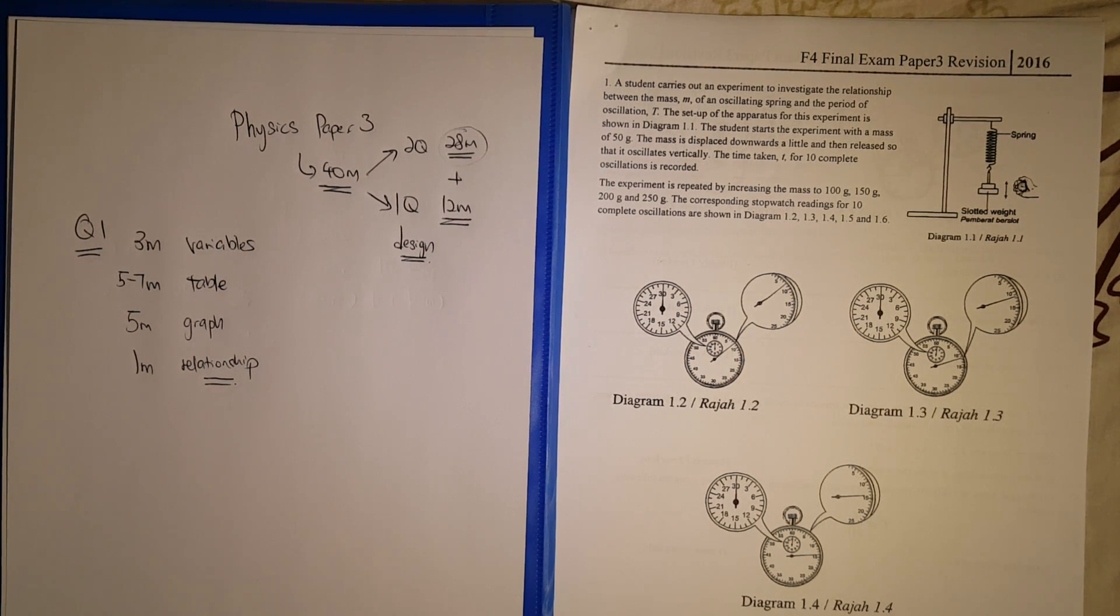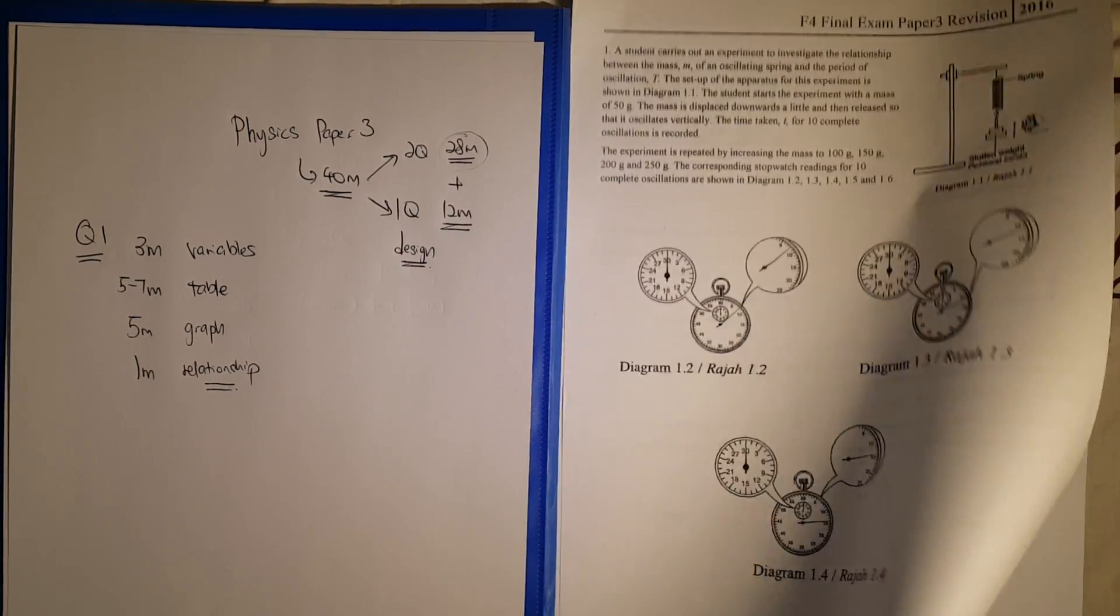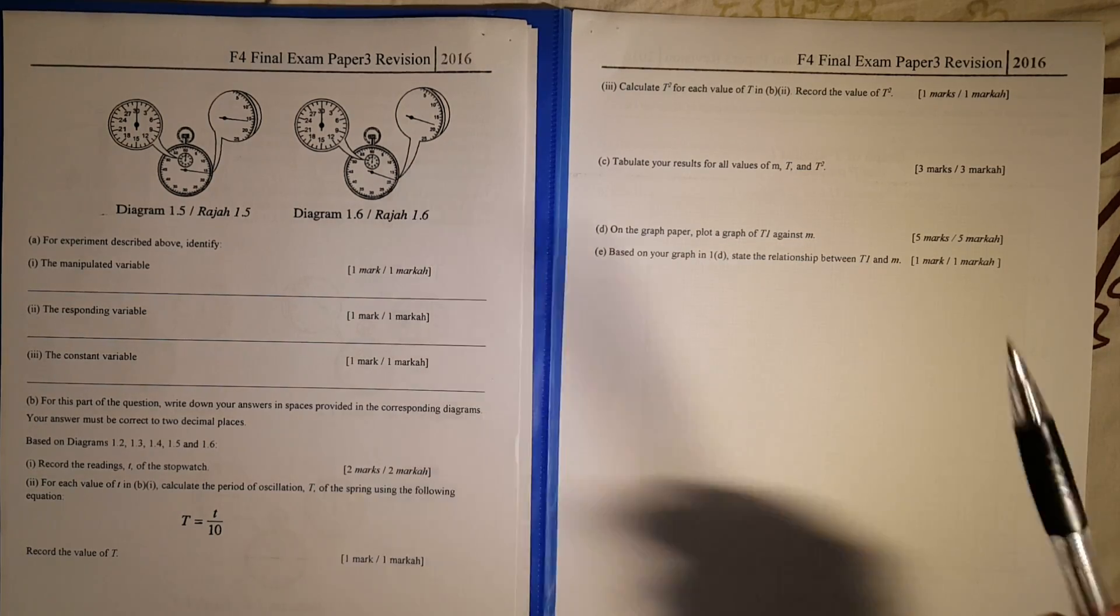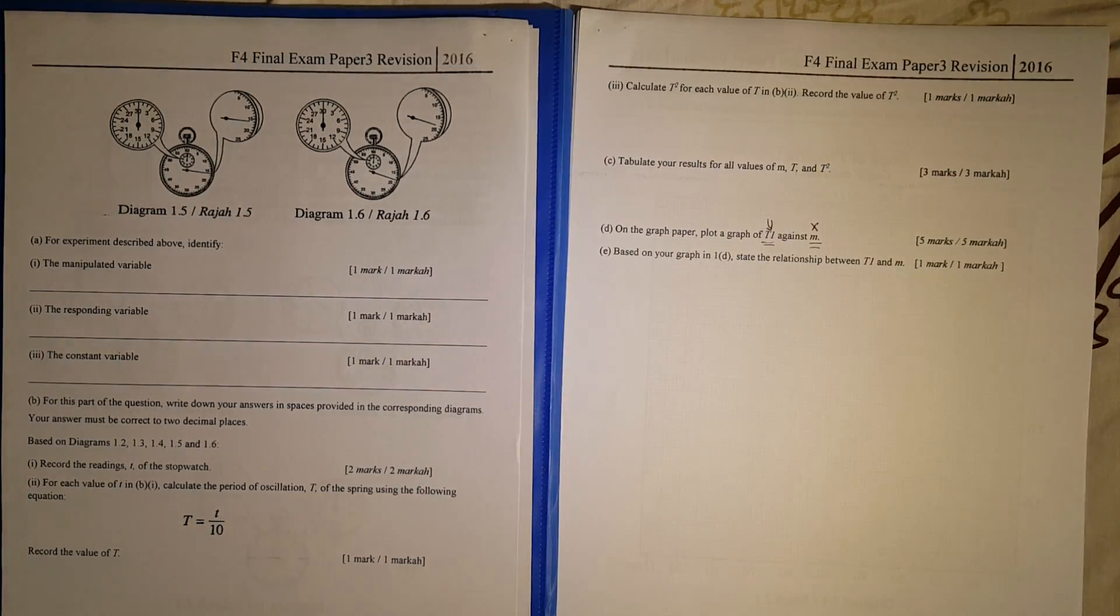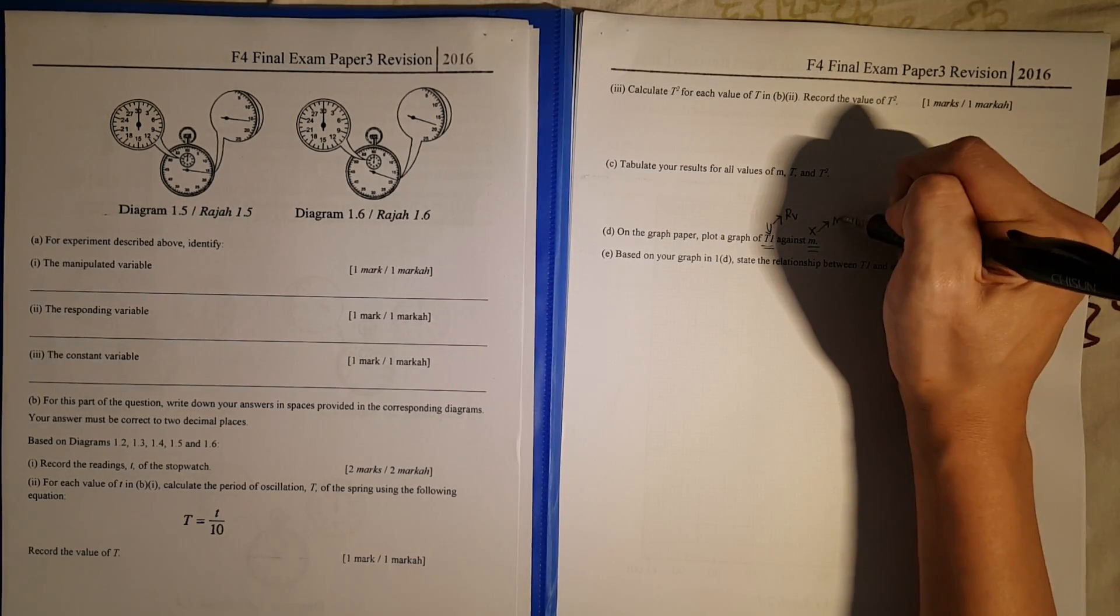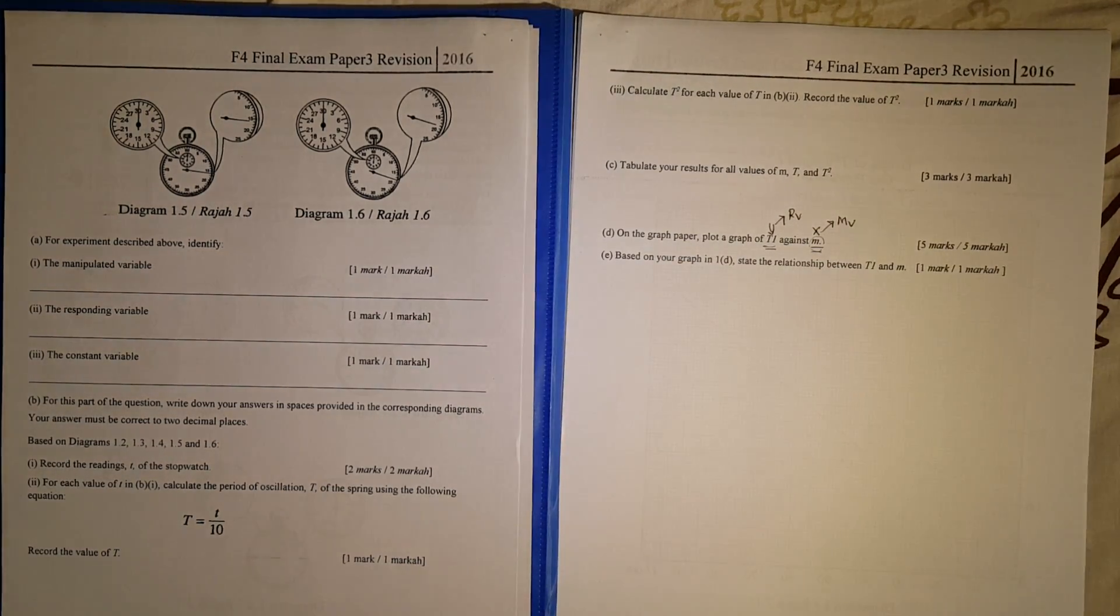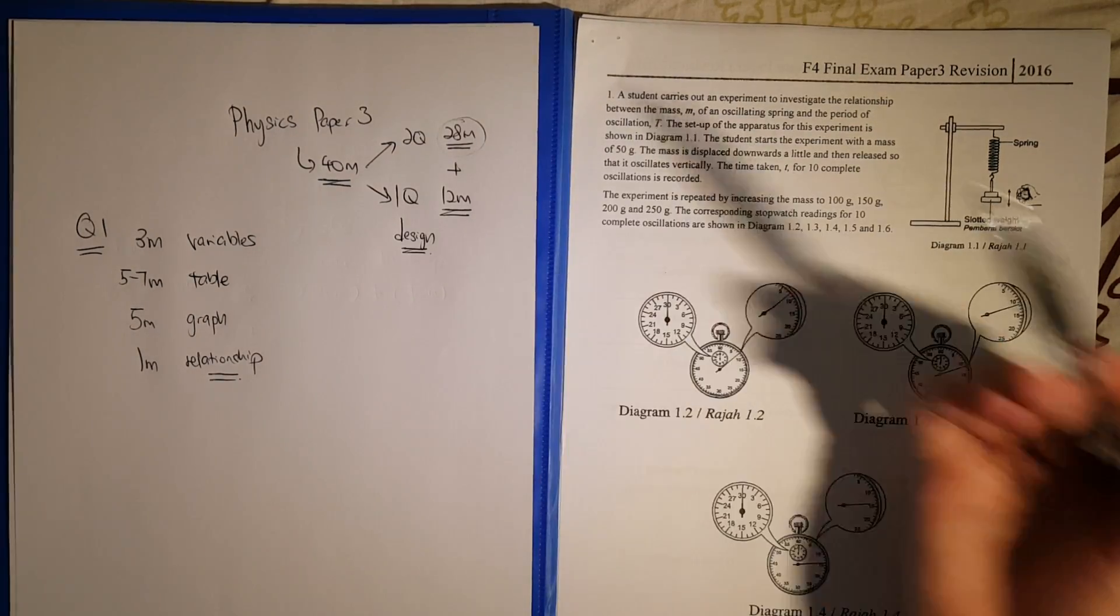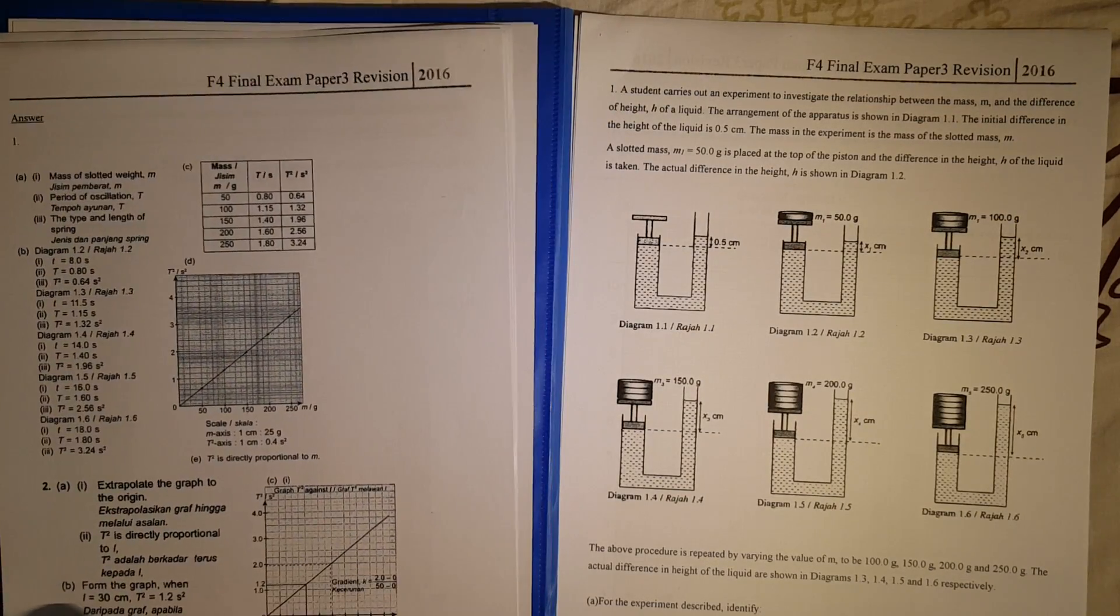Method number one: if you want to look for a variable, always look at the first question. They will always call you to draw a graph. You see here it says record then draw on the graph paper. Remember, the first thing that you see versus the second thing is always a graph of y against x. On your y-axis it will always be the responding variable, and on your x-axis it will always be your manipulated variable. So if I look at this, I know that the mass will be my manipulated variable, the time of oscillation will be my responding variable, which I get from here, t and m. Is this method 100% workable? Yes, it's pretty much 100% workable.